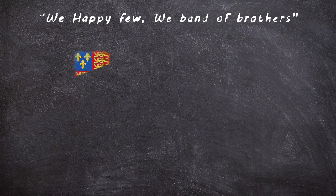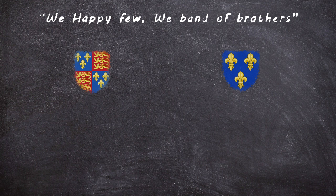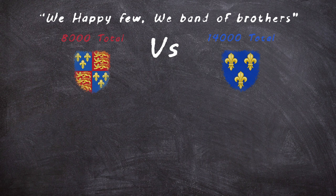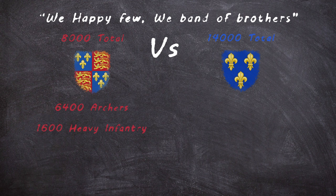At this point, estimates begin to widely vary for the actual size of both French and English forces in the field, though most estimates place the English army in the range of around 8,000 men, having lost many to disease and desertion along the desperate trail from Harfleur. The army consisted almost entirely of longbowmen, making up 80% of the ranks, with the remainder being a mixture of men-at-arms and dismounted knights.